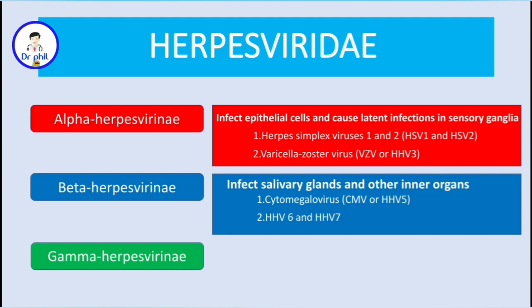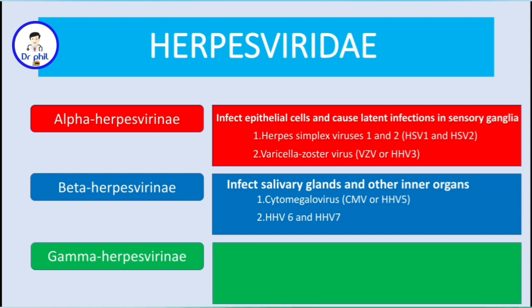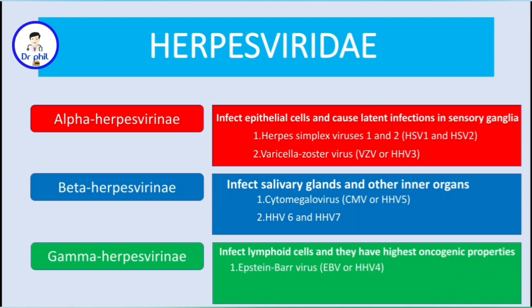The other species are human herpes virus 6 and human herpes virus 7. On gamma-herpesvirinae, we find viruses which usually infect lymphoid cells. These viruses have the highest oncogenic properties in the whole Herpesviridae family. The species include Epstein-Barr virus, or EBV, also known as human herpes virus 4, and the other species is Kaposi's sarcoma-associated virus, or human herpes virus 8.